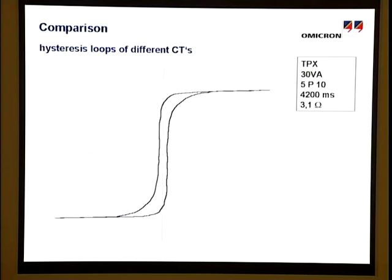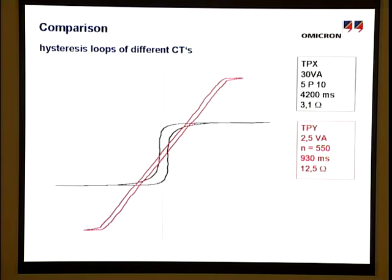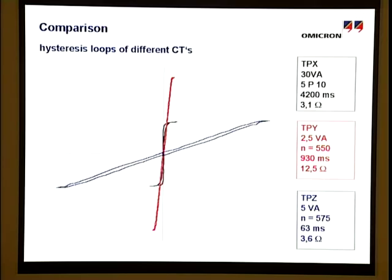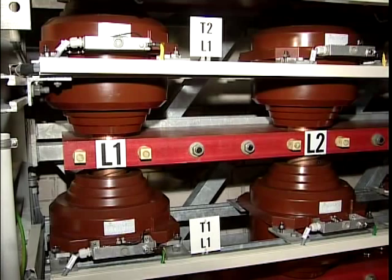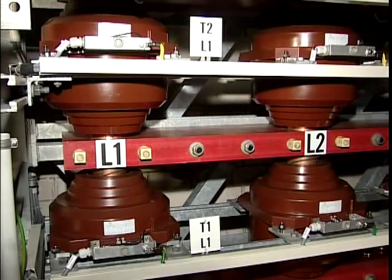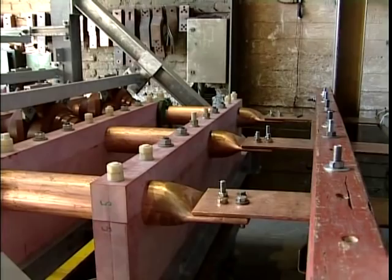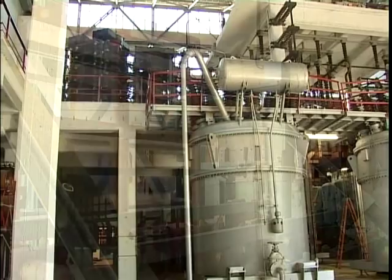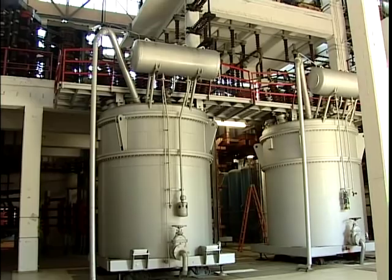Making use of an anti-remanence core or linear characteristic CTs with air gaps was discussed as a possible solution. With regard to this special application, the theoretical calculations, particularly with consideration of the thermal stress caused by the tests, were to be confirmed. For this, the designed current transformers were installed in the laboratory of the Institut Prüffeld für Elektrische Hochleistungstechnik GmbH. The necessary short circuit currents can be adjusted automatically in amplitude, phase angle and DC offset by coils and resistances controlled remotely via PC.